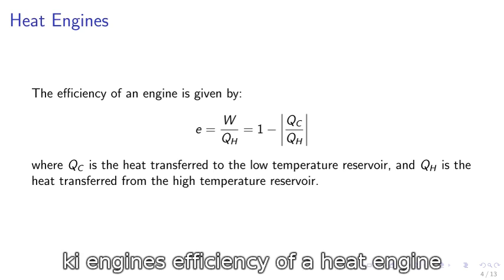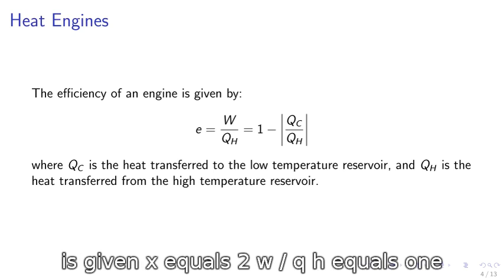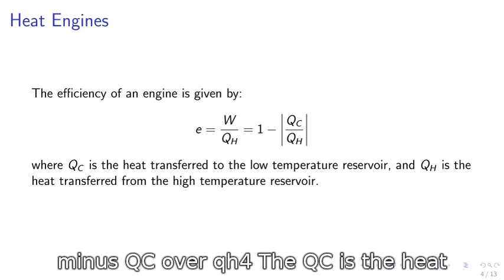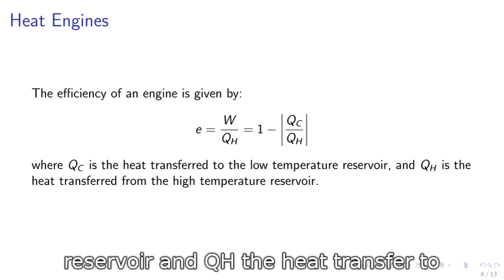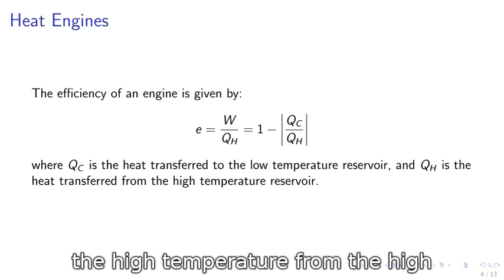Heat engines. The efficiency of a heat engine is given by e equals W over QH equals one minus QC over QH, where QC is the heat transfer to the low temperature reservoir and QH is the heat transfer to the high temperature reservoir.